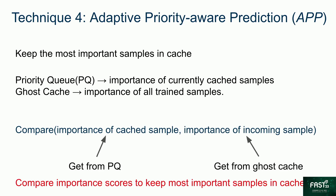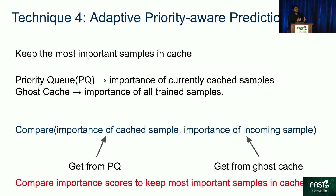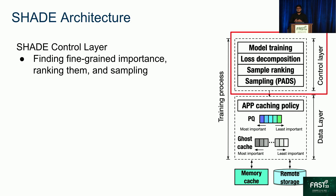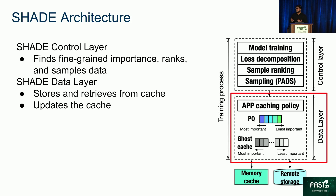To address the constant change of importance scores and keep the most important samples in cache, Shade adopts the app cache policy. The app cache maintains two queues: PQ and the ghost cache. The PQ tracks the metadata of the importance of all cached samples, and the ghost cache tracks the metadata of the importance of all trained samples. By comparing the importance of a cached sample with that of an incoming sample during training, Shade manages to keep the most important samples in cache. The Shade architecture consists of two layers: the control layer and the data layer. The control layer finds fine-grained importance, ranks them, and samples them, while the data layer stores and retrieves samples from the cache and updates the cache using the app cache policy.